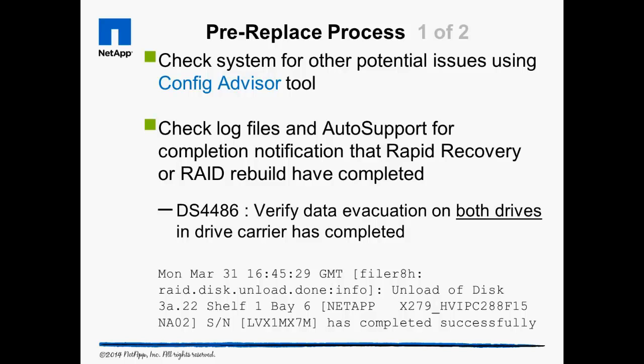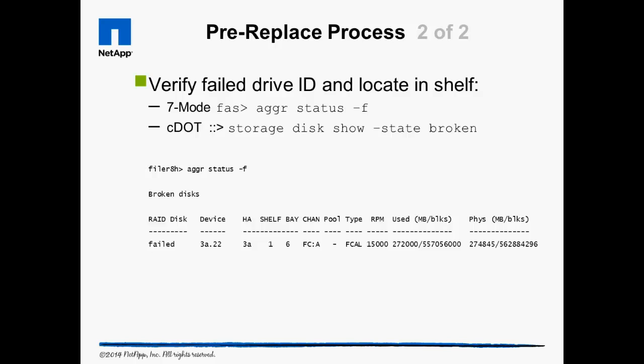The sample system log entry indicates FC-AL drive 3a.22 in bay 6 of shelf 1 has been successfully failed out of the system. The aggr status -f command for 7-mode and the storage disk show command for clusters are the first place to check. Then check the message logs and auto supports to confirm the disk ID as well as find completion notification messages from Data OnTap.